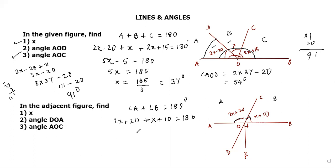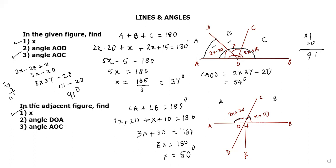Simplifying: 3x + 30 = 180, so 3x = 150, which gives x = 50 degrees. That's the answer to the first part — x equals 50 degrees. Very simple linear equation.